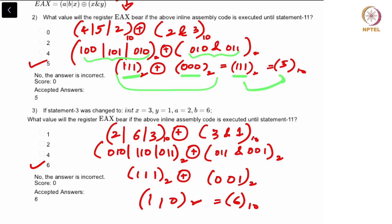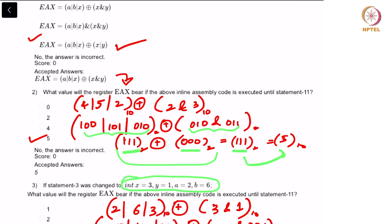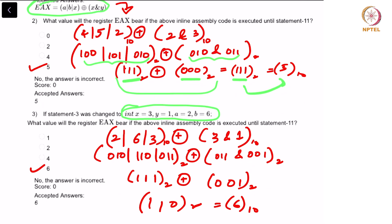If statement 3 was changed — that is, now we are changing the values of X, Y, A and B — you recalculate by substituting all these values inside the same EAX expression. You obtain 2 OR 6 OR 3, XOR with 3 AND 1. When you perform this, OR of these three gives you 111, AND of this gives you 001, and XOR gives you 110 which is 6 in decimal. Hence 6 is the right answer.